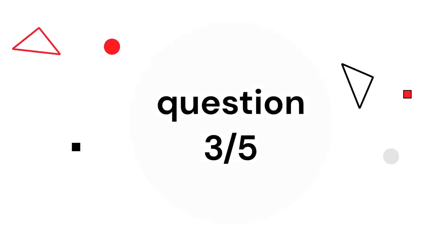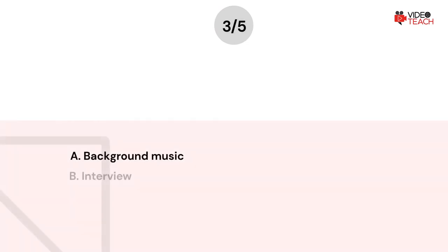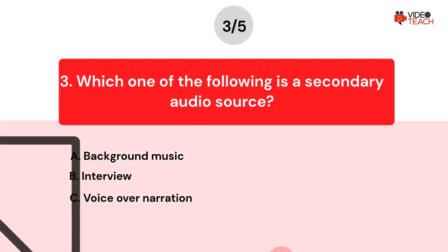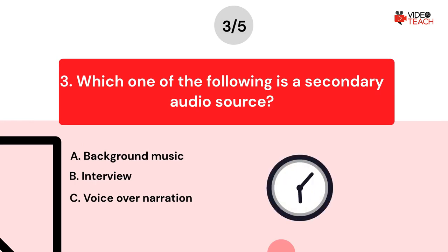Question number three. Which one of the following is a secondary audio source? Option A, background music. Option B, interview. Option C, voice over narration. Now you have about 15 seconds to think about your answer.